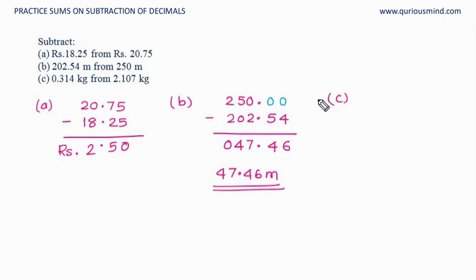Next problem: subtract 0.314 kilogram from 2.107 kilogram. From comes first, so 2.107 minus decimal point here, 0.314, decimal point just below this. The result is 1.793 kilograms. So the answer is 1.793 kilograms. Let's do the next one.